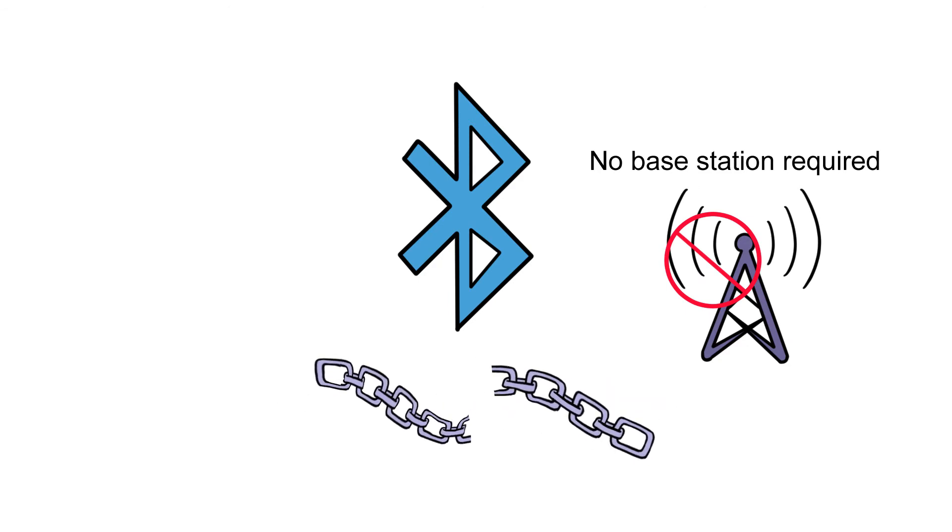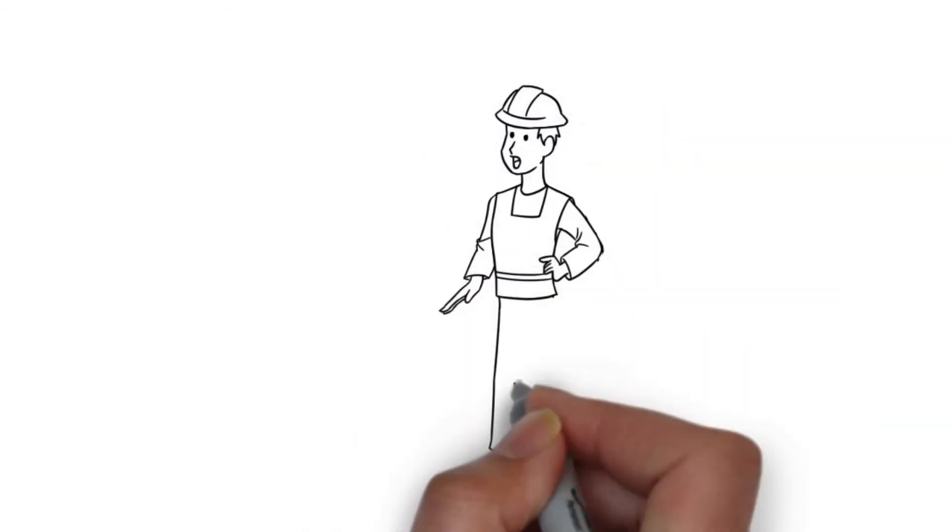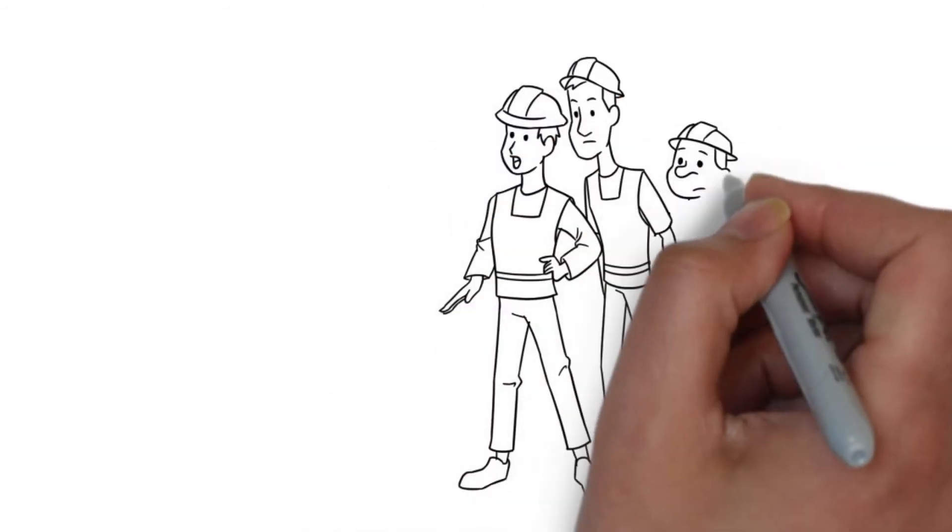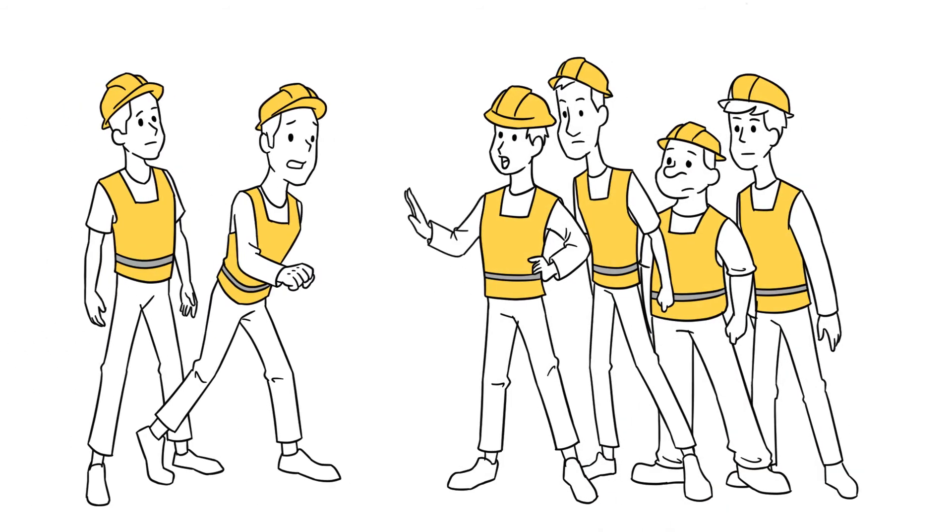But just like the saying, a chain is only as strong as its weakest link, a Bluetooth network needs all units to function. One loose link is enough to break down the whole connection. Bluetooth is also tedious to set up, and very limited in terms of number of users in a network, with three to four being the practical limit.